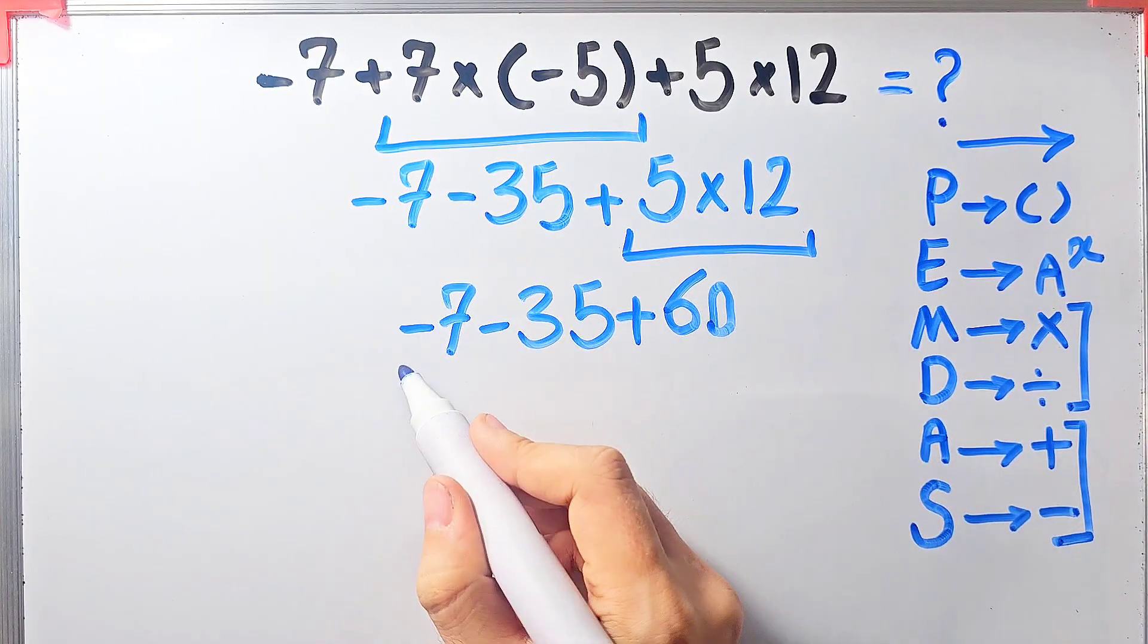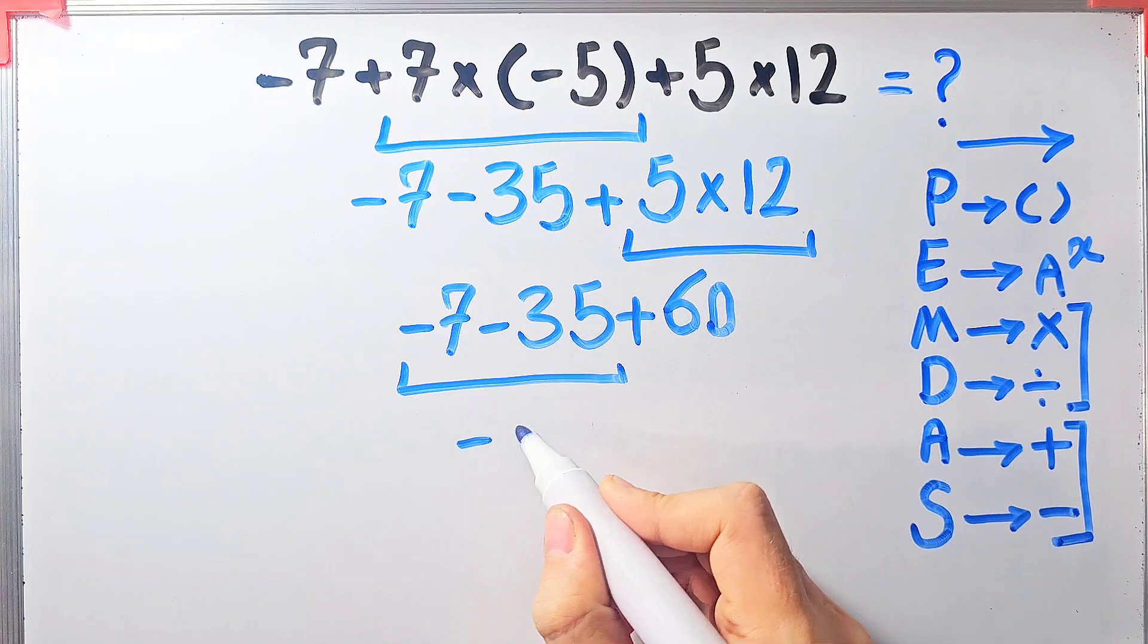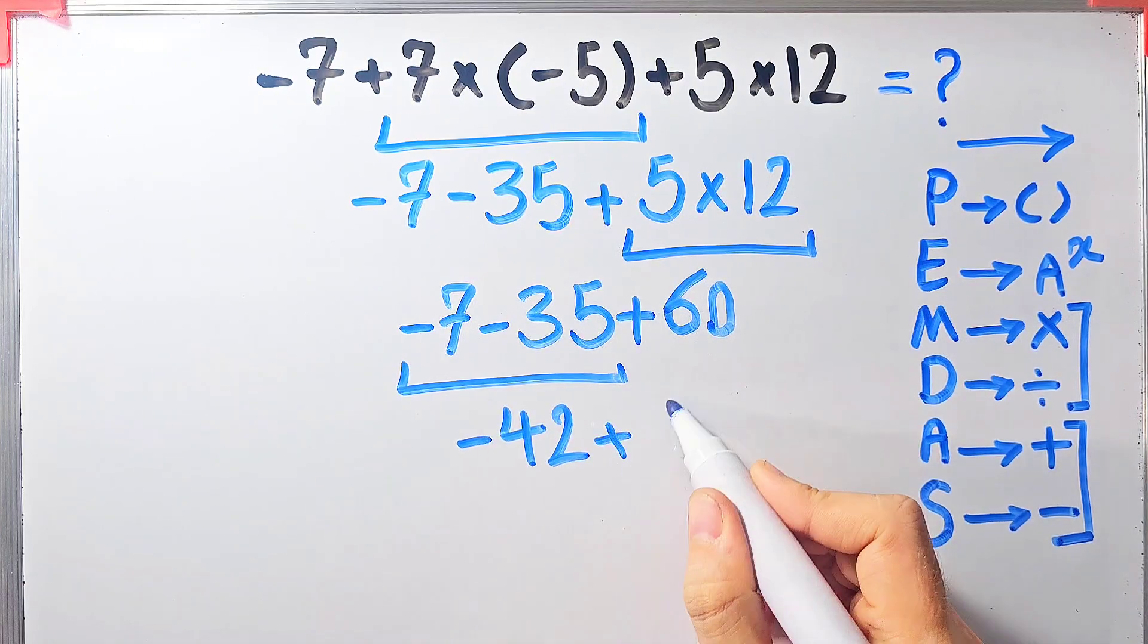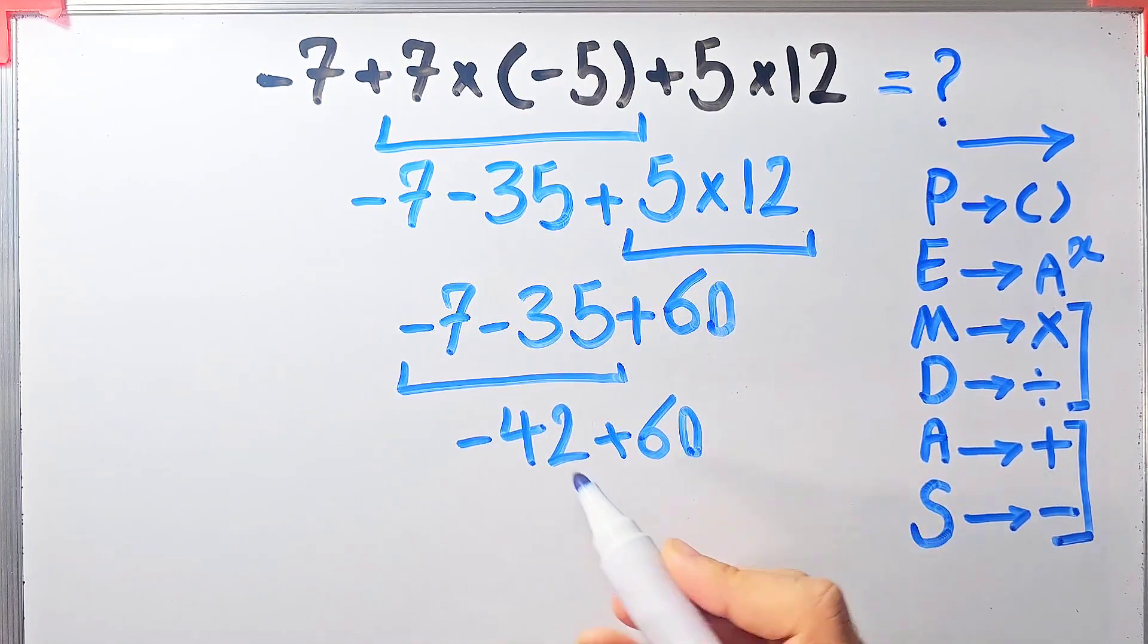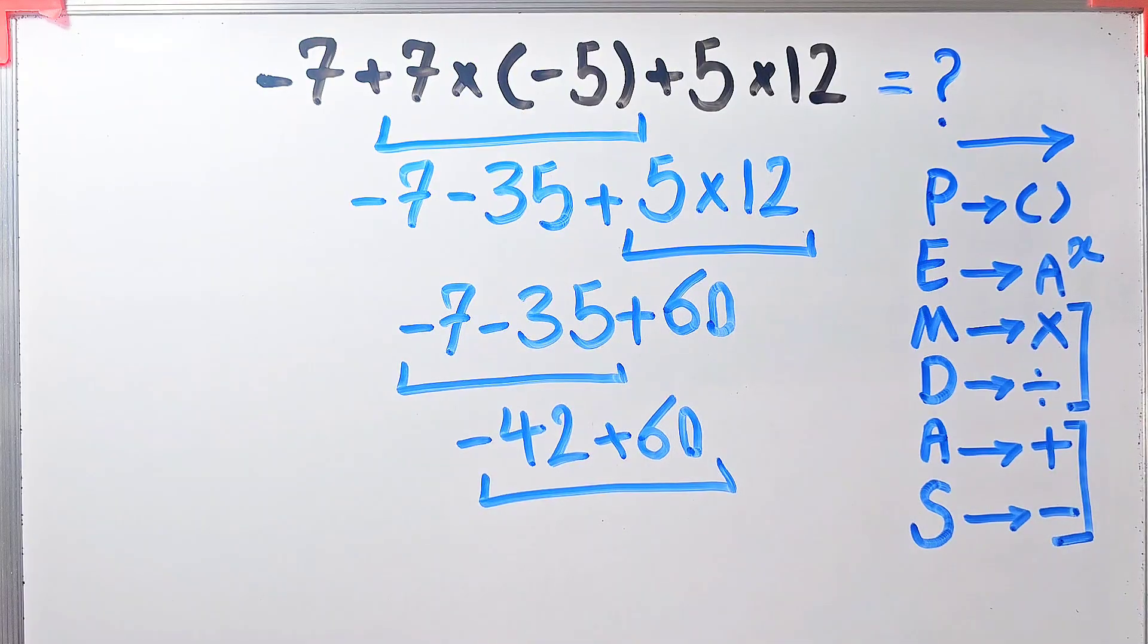Negative seven minus thirty-five equals negative forty-two. Now we have negative forty-two plus sixty. Negative forty-two plus sixty equals eighteen.